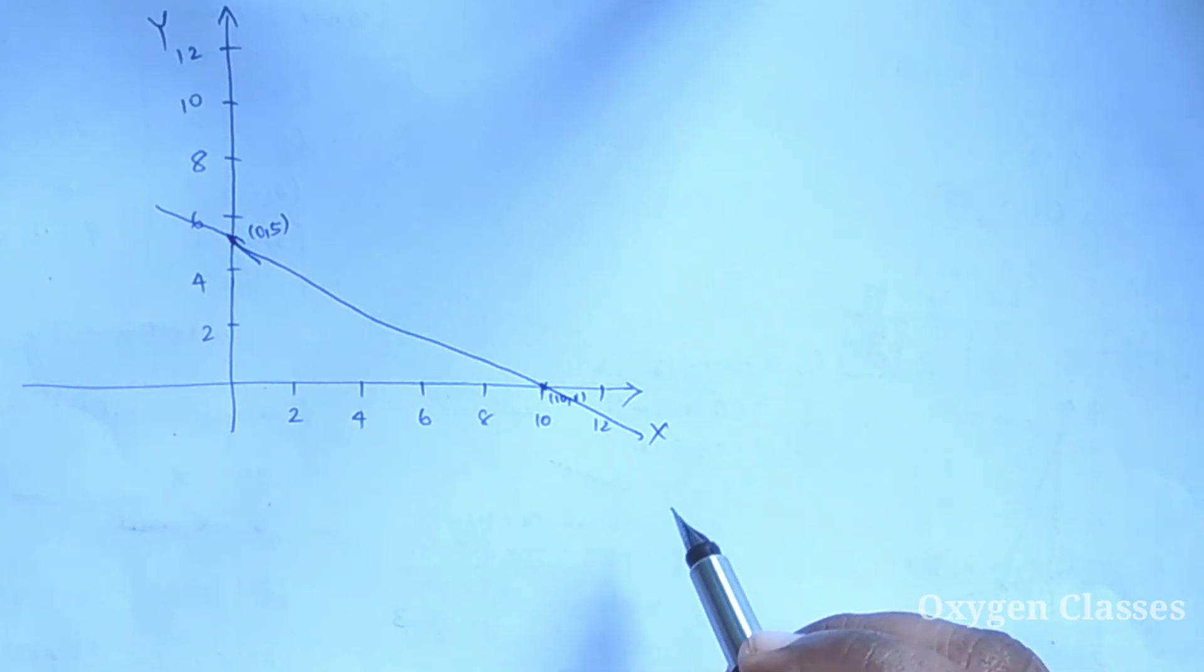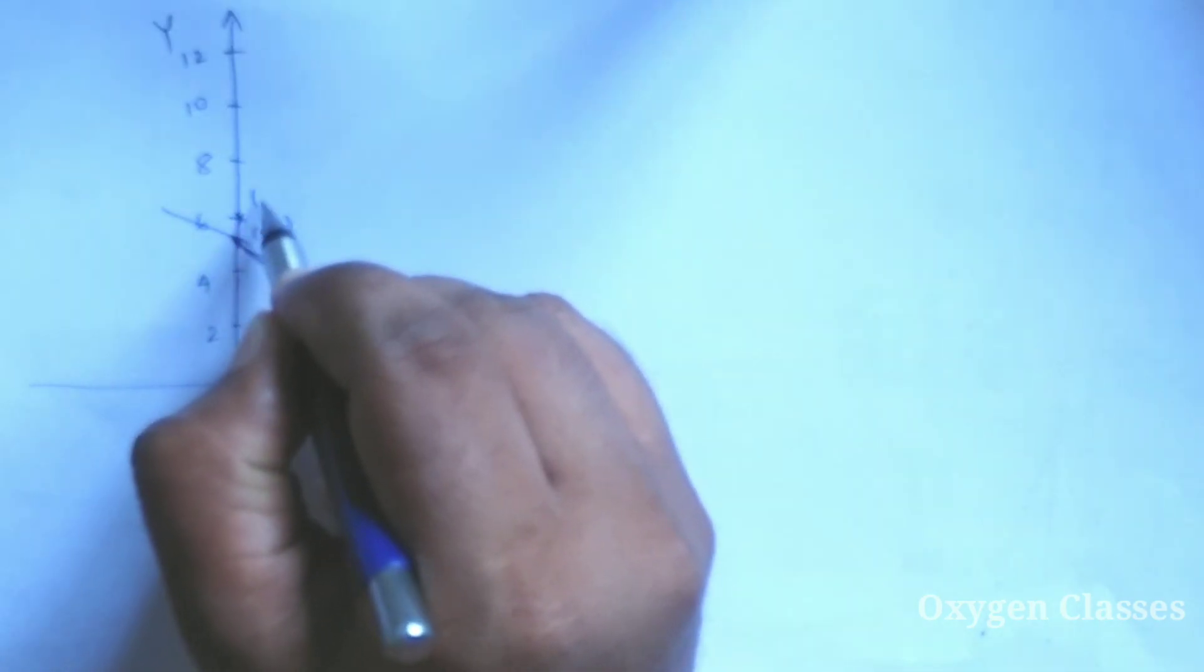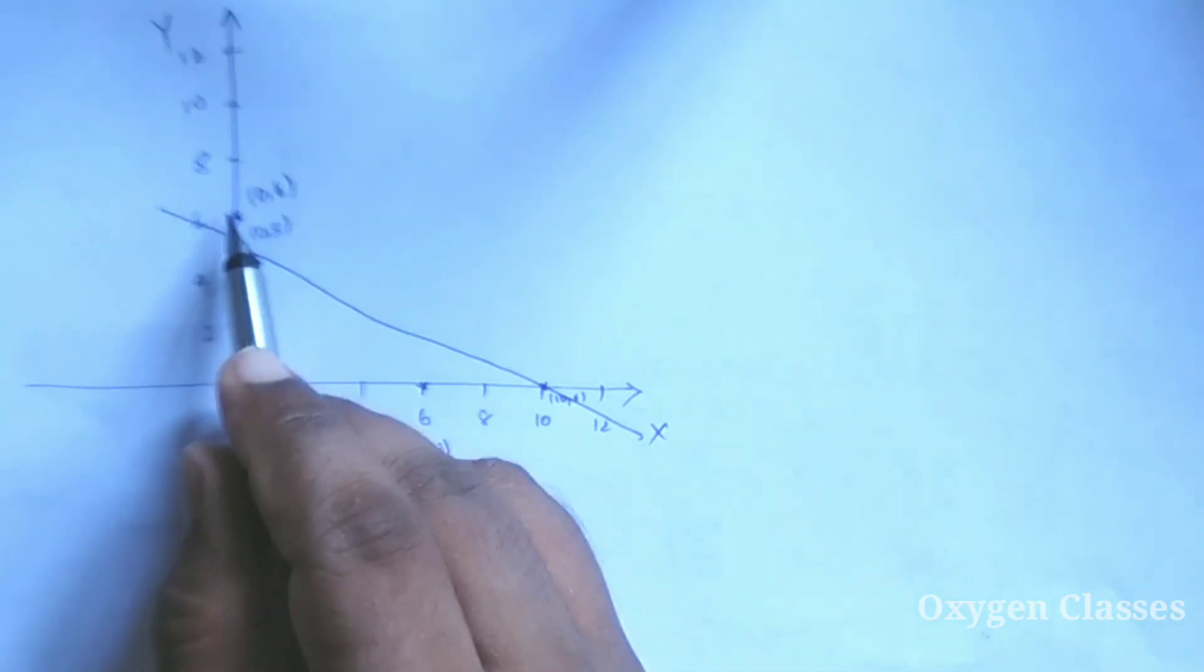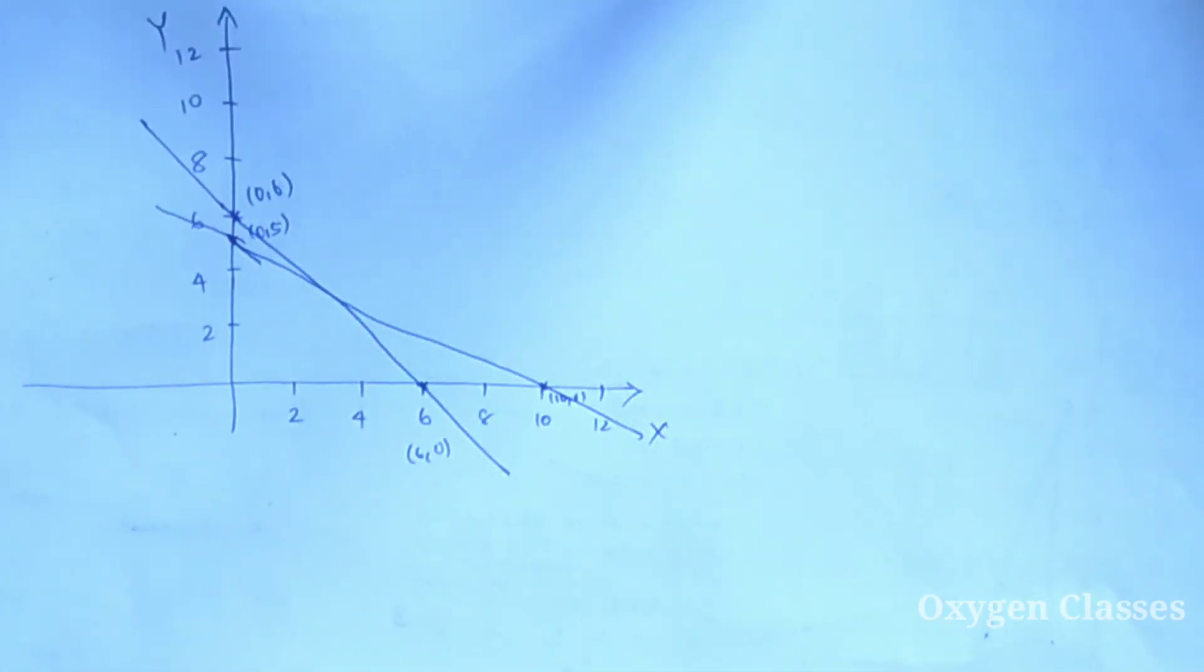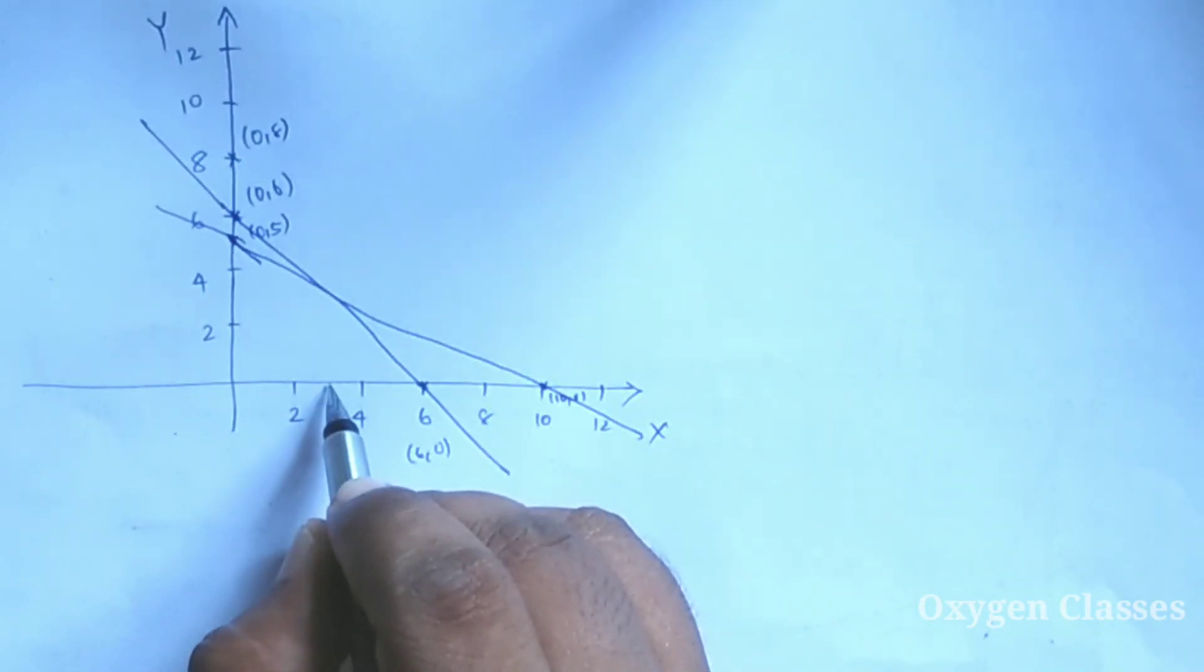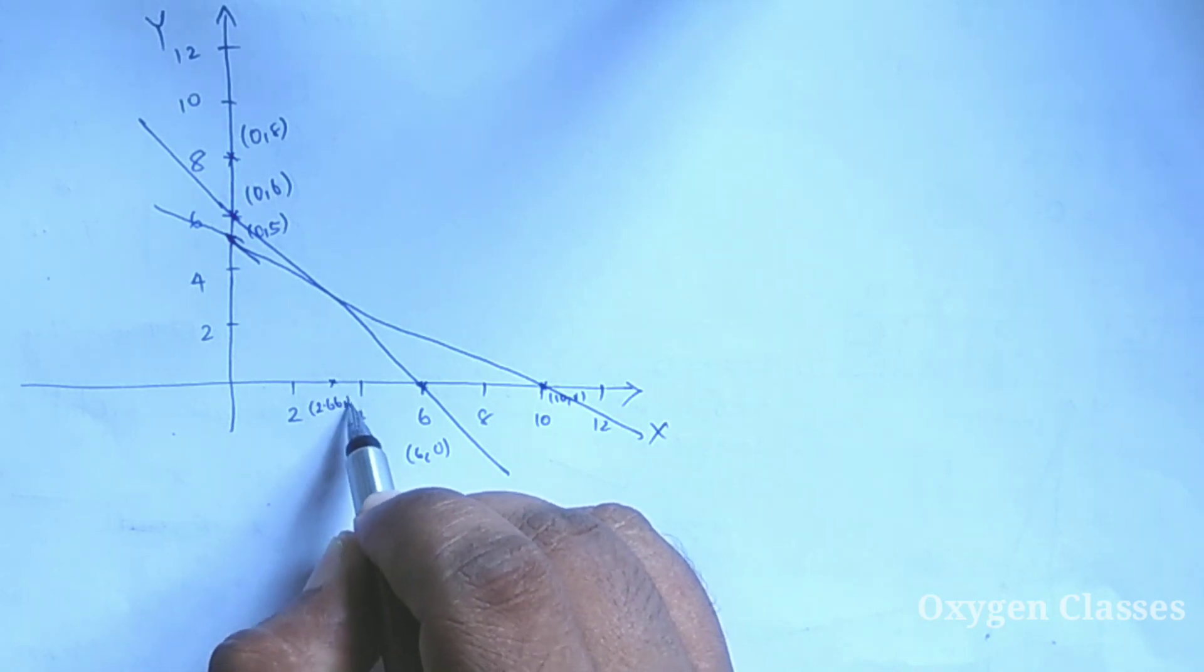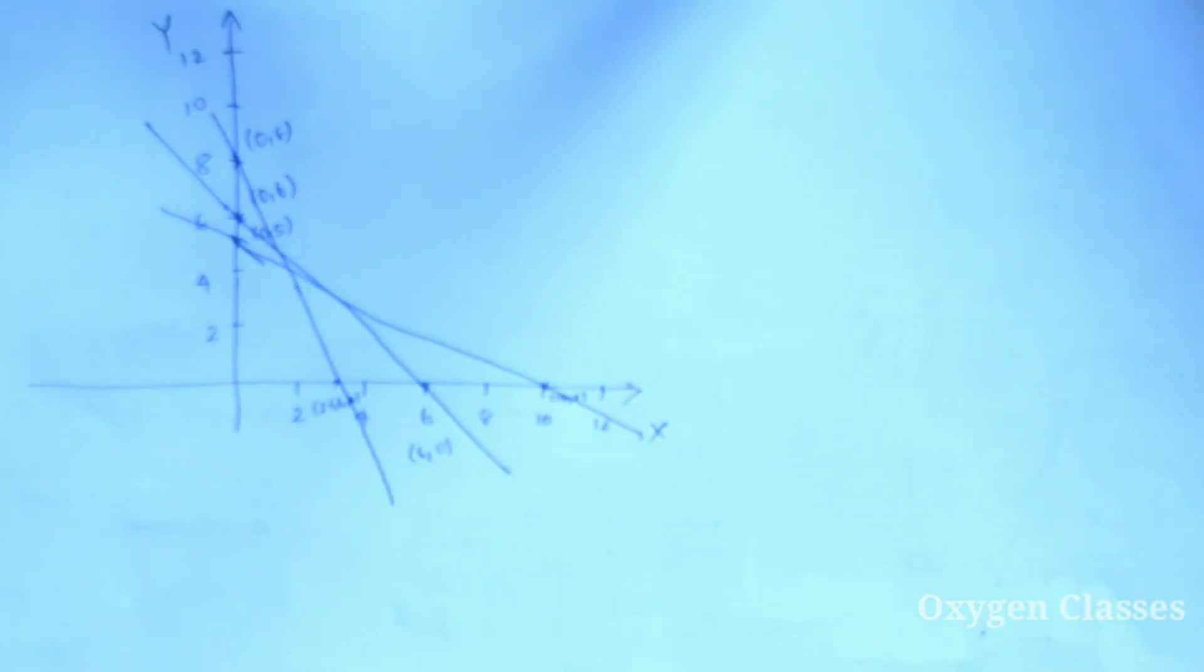This is the second line. And the third line is X equals 0, Y equals 8, that's (0, 8), and Y equals 0, X equals 8 by 3, that's (2.66, 0). Now we draw the lines.